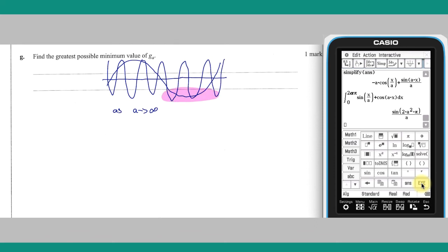In the vicinity of the minimum value of the cos ax wave, the sine x over a wave will be at a minimum or close to it, giving g_a a minimum close to or at its least value of negative 2. This suggests focusing on small values of a, i.e. 1, 2, and 3.